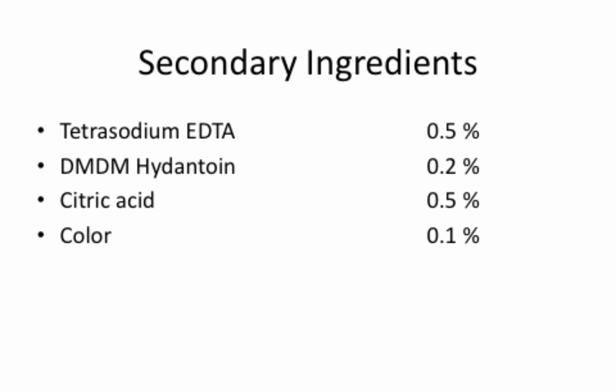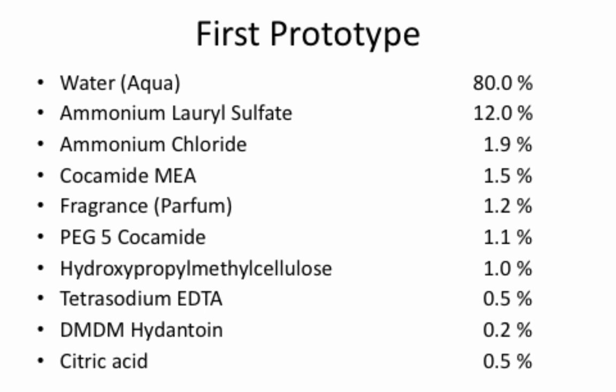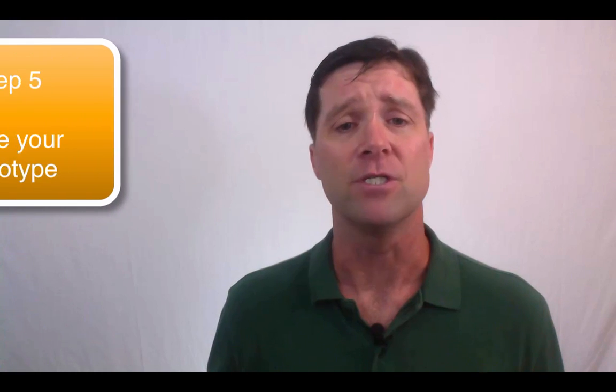So let's put it all together and see what the formula would look like. To accommodate the secondary ingredients, we have to adjust the water levels from what we had before. So our first prototype formula would look something like this — a compilation of all the ingredients and a guess at their levels. Then we can move on to the next step, which is making the prototype.